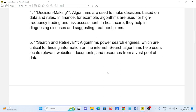Number five, search and retrieval. Algorithms power search engines which are critical for finding information on the internet. Search algorithms help users locate relevant websites, documents, and resources from a vast pool of data.